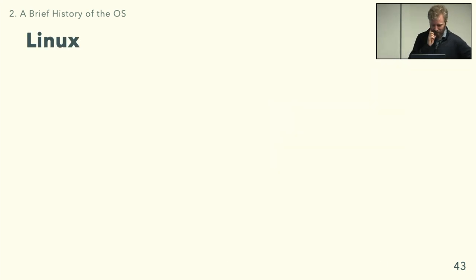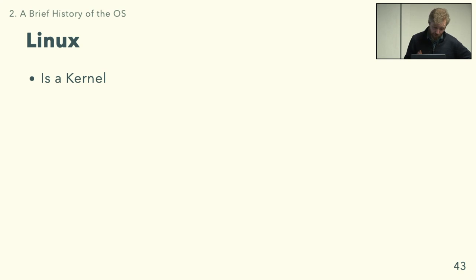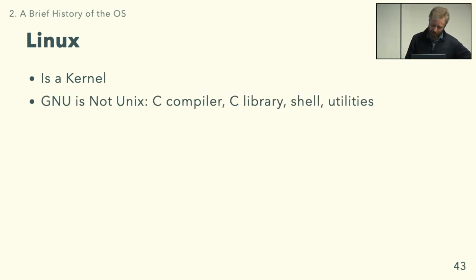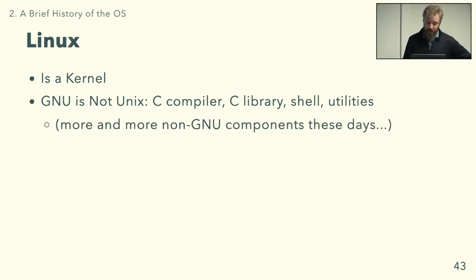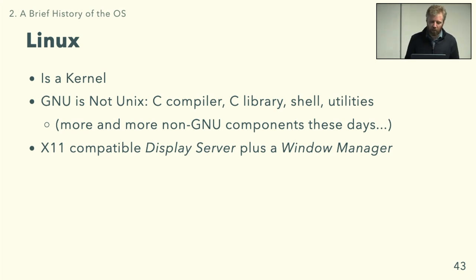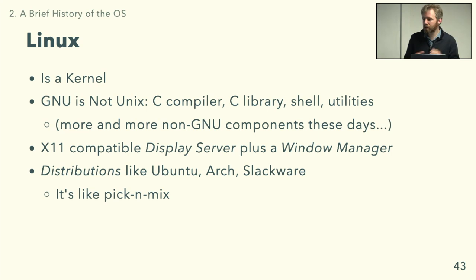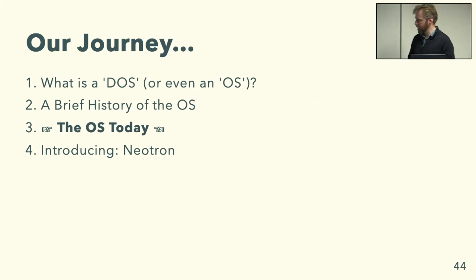Linux is not an operating system — well, technically Linux is a kernel. The operating system is really GNU, which is an open-source clone of Unix. GNU stands for 'GNU's Not Unix' — it's a completely free software implementation including a C compiler, library, shell, and utilities. Linux is the kernel, but these days nobody really distinguishes, and a Linux distribution is a pick-and-mix of various components — display servers, sound subsystems — with less and less GNU in it.